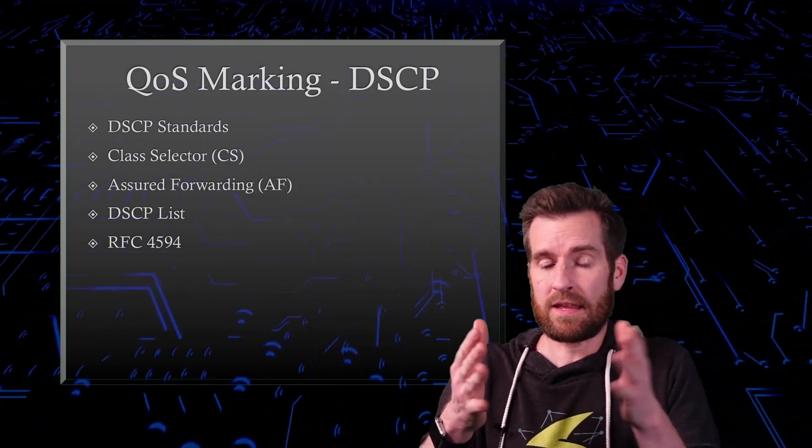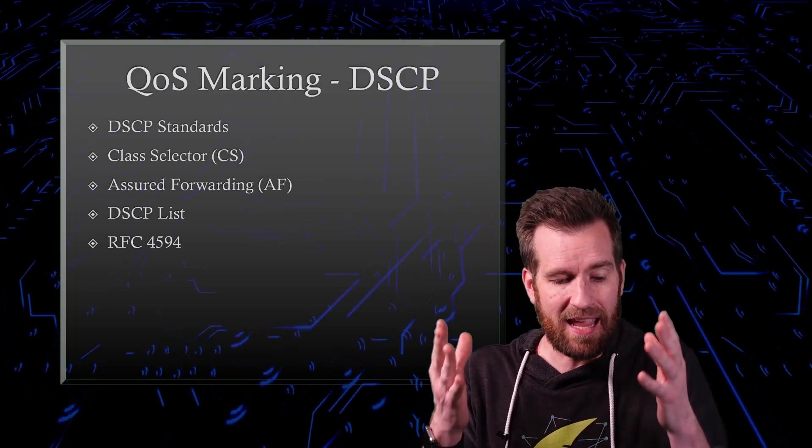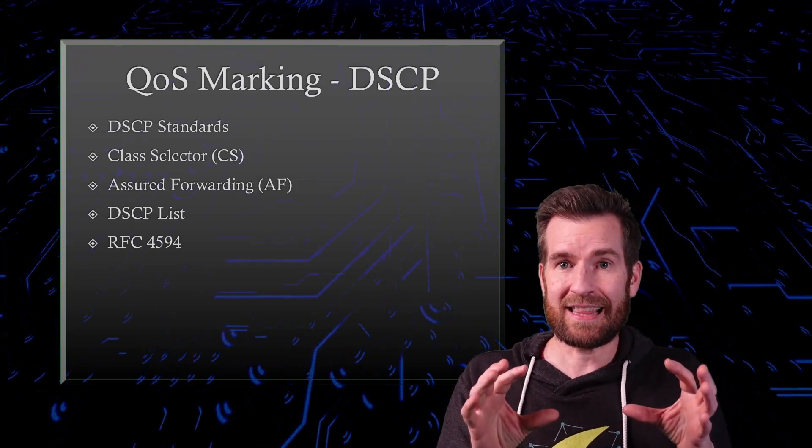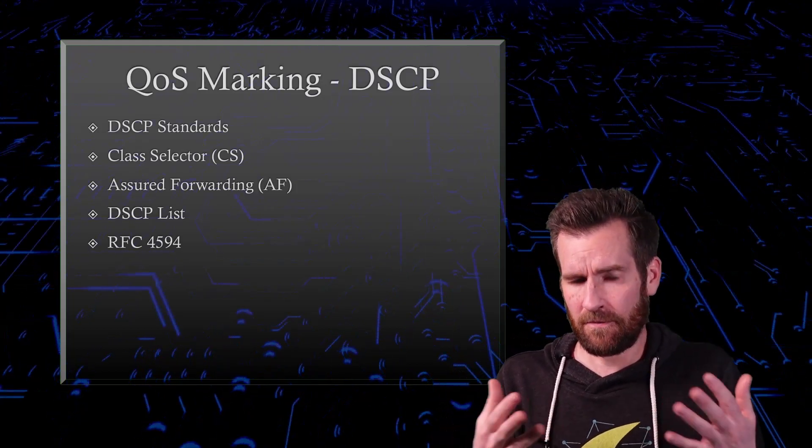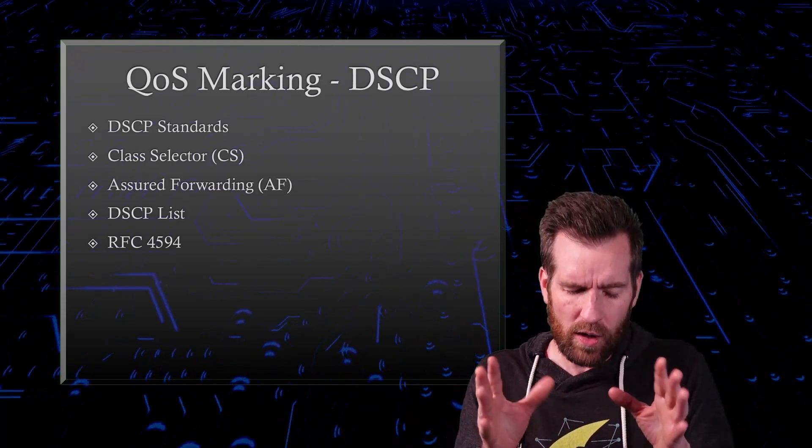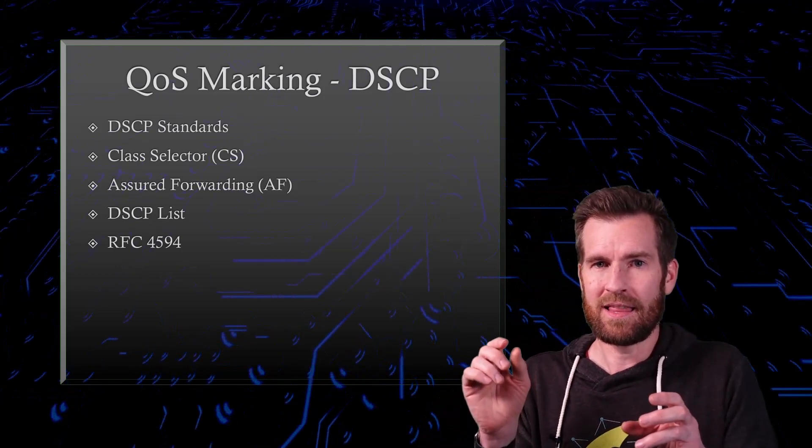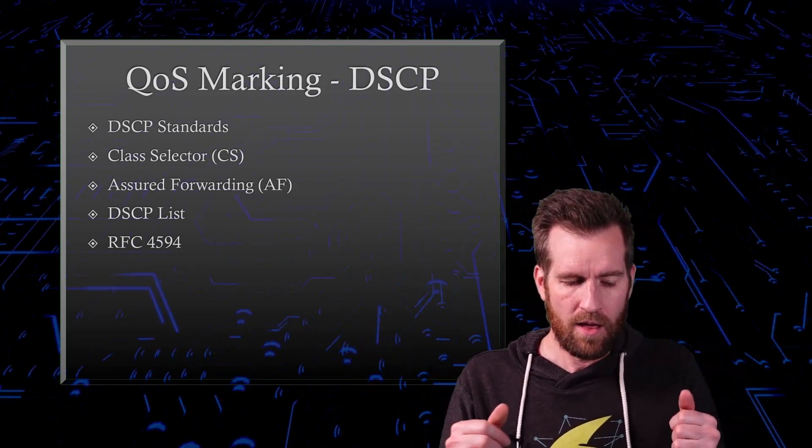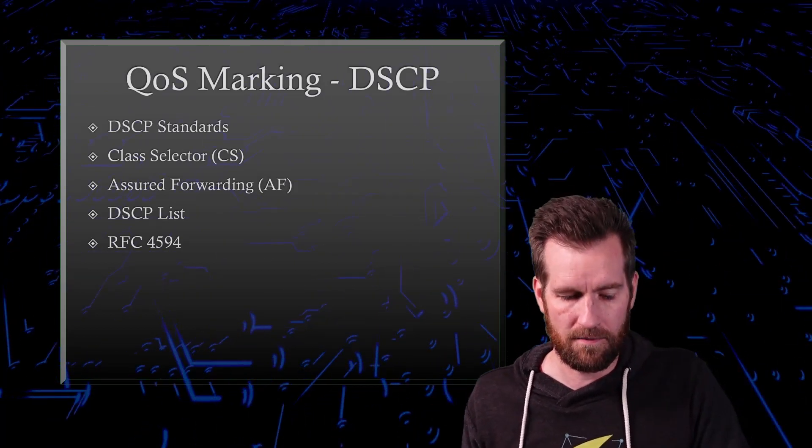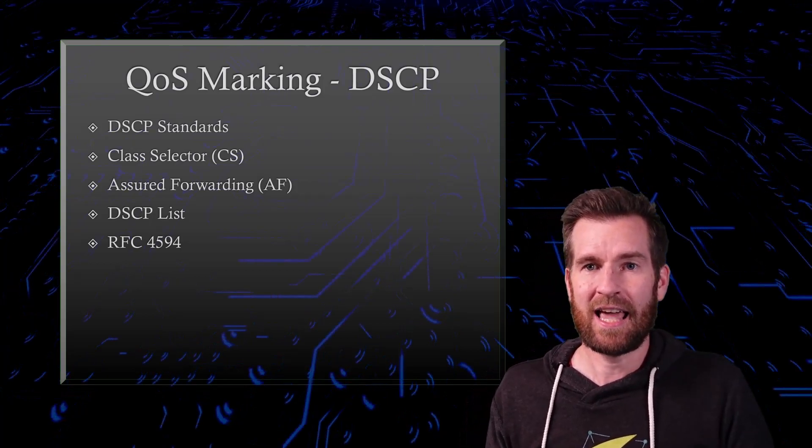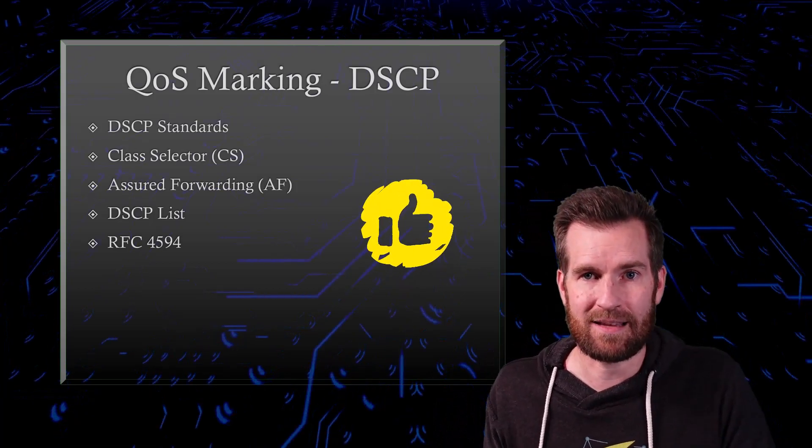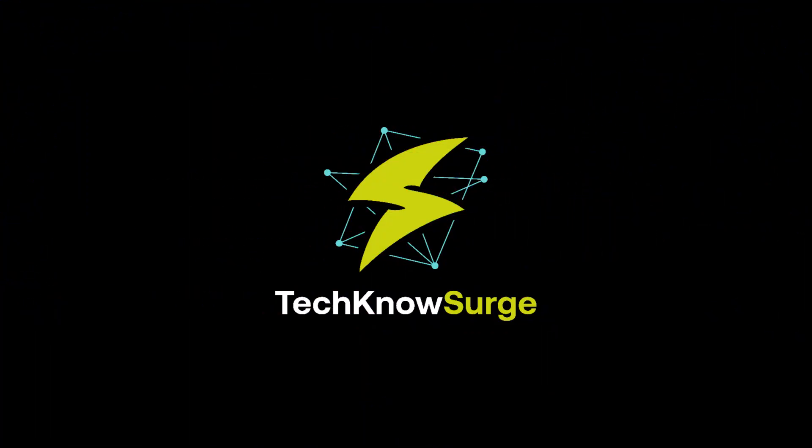There you have it. So we talked about the few different DSCP standards that are out there, and we talked more in-depth about one of those standards, being the class selector, which is fairly basic. And then we got into the assured forwarding, which has a couple little weird nuances to it and how it determines the DSCP value. Then we went over the full DSCP list, and we wrapped it up by talking about RFC4594 and how it defines where you would use the different categorizations with that DSCP list.